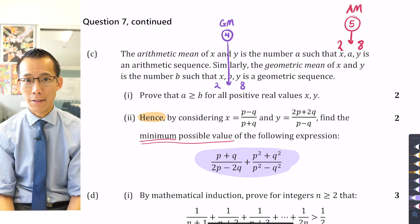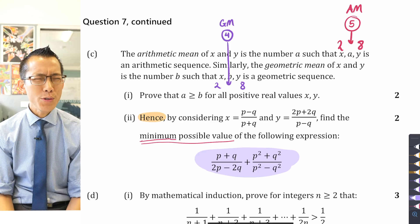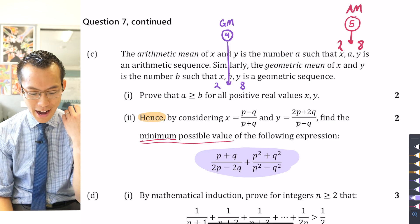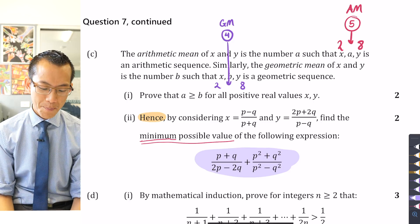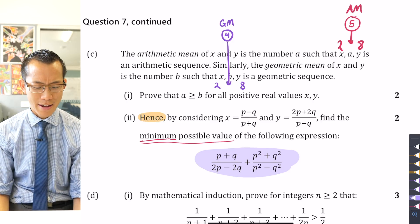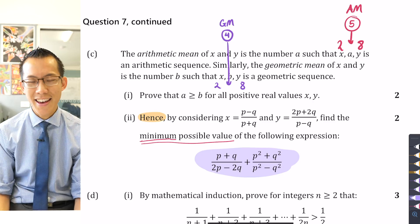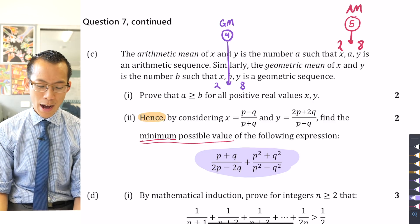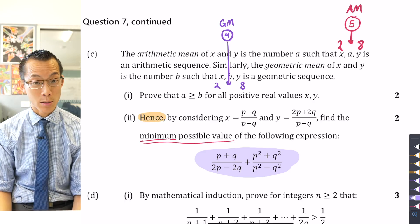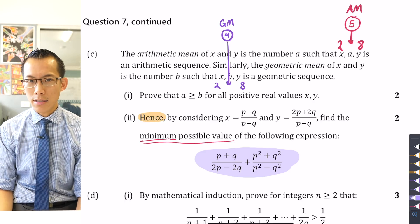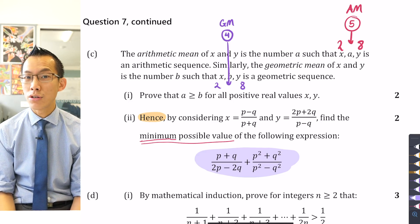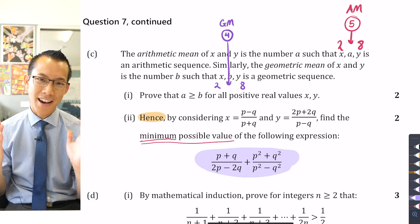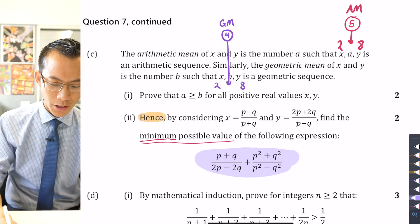There are two reasons not to differentiate. First, the question explicitly says to use AM-GM. Second, the expression involves two variables, p and q. If you tried to differentiate, you'd have to decide: differentiate with respect to p or with respect to q? Treating one as constant while differentiating with respect to the other is a partial derivative — that's university-level multivariable calculus, not covered in this course. So calculus is not the answer here.